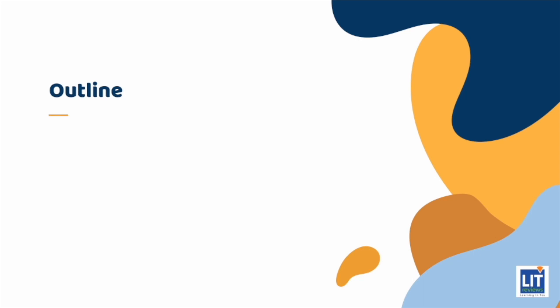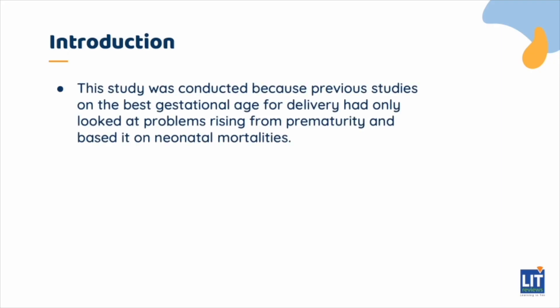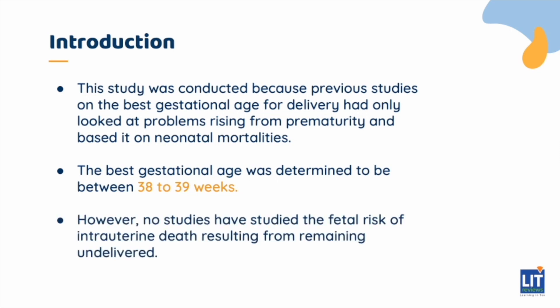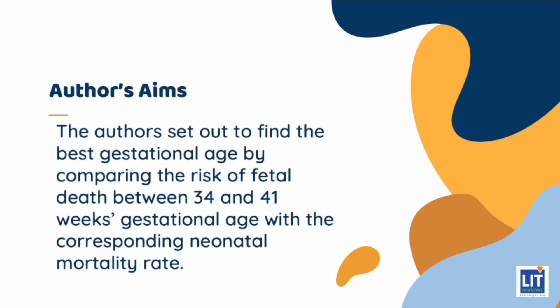We would first talk to you about what this paper is about and then go on to critique the article. This study was conducted because previous studies on the best gestational age for delivery had only looked at problems rising from prematurity and based it on neonatal mortalities. The best gestational age was determined to be between 38 to 39 weeks. However, no studies have studied the fetal risk of intrauterine death resulting from remaining undelivered. The authors then set out to find the best gestational age by comparing the risk of fetal death between 34 and 41 weeks gestational age with the corresponding neonatal mortality rate.